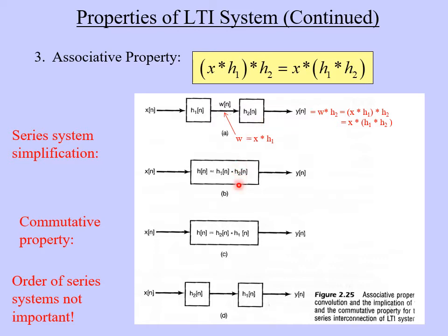We can go a step further by using the commutative property to reverse the order: instead of h1 convolution h2, that equals h2 convolution h1. Working backwards, we split the single system into two subsystems but with h2 first and h1 second. So we've proven two things: whenever we have two subsystems in series, we can combine them using convolution of the impulse responses; and we can also reverse the order of the two systems with no difference. The order of a series system is not important.